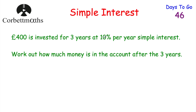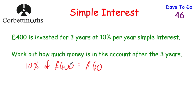If I was doing a question like this, the first thing I would do is work out what the interest earned every single year would be — and that's 10% of the amount invested. So we need to work out 10% of £400. To find 10% of a number you just divide it by 10, so that's £40. So 10% of £400 is £40, meaning £40 interest is earned every single year with simple interest. Now it's invested for three years, so we multiply this by three to find out how much interest is earned in total. We take our £40 and multiply by three, which equals £120.